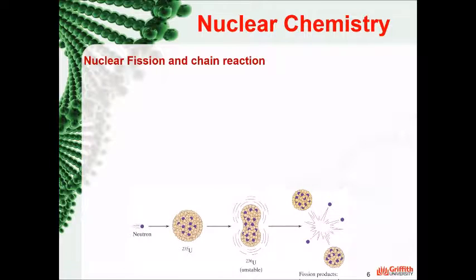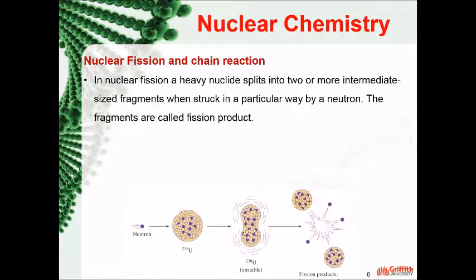Now let's discuss some of the applications of nuclear chemistry. One important application for nuclear chemistry is nuclear fission, which means splitting elements into two. This is the concept of the nuclear bomb. In nuclear fission, a heavy nuclide splits into two or more intermediate sized fragments when struck in a particular way by a neutron. The fragments are called fission products.